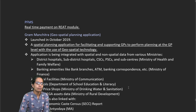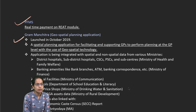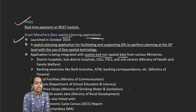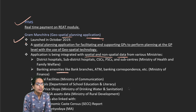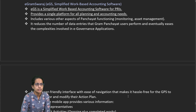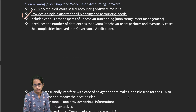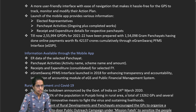The real-time payment module through PFMS and Gram Man Chitra talks about a geospatial planning application with rural maps containing spatial and non-spatial data including hospitals, banking amenities, postal services, schools, fair price shops, and MGNREGA asset data. eGram Swaraj is a simplified work-based accounting software providing a single platform for planning and accounting needs in rural areas, accessible through a mobile app.